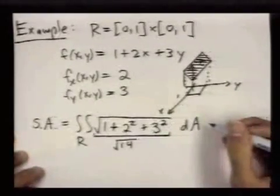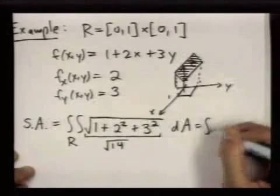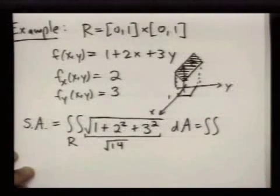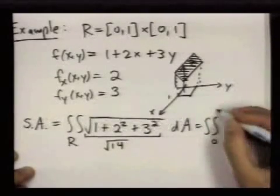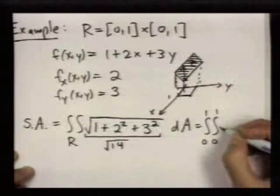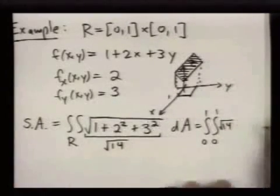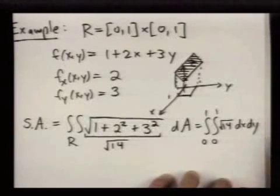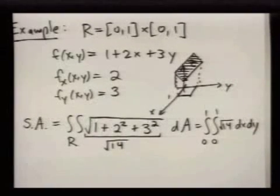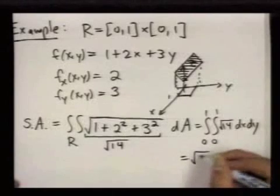So in the end, I could do this as an iterated integral. I'll go 0 to 1, 0 to 1, square root of 14, dx, dy, and this just comes out to be the square root of 14.